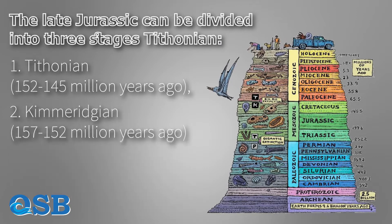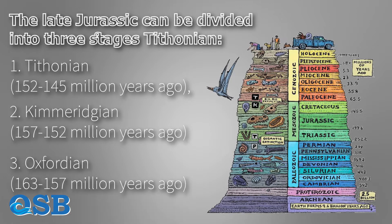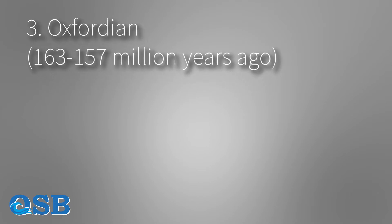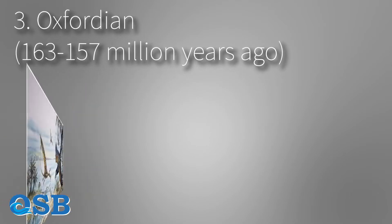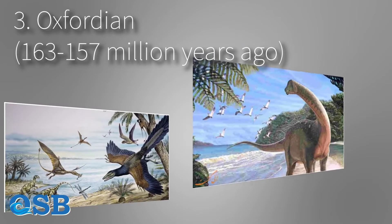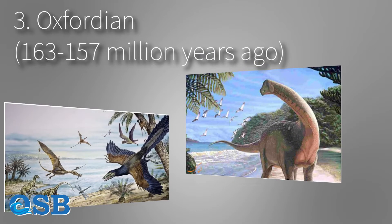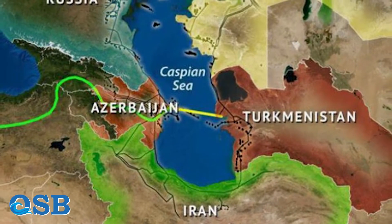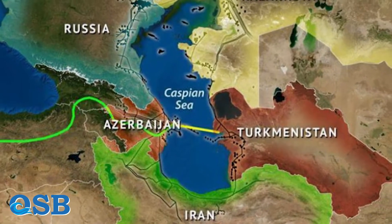The Late Jurassic can be divided into three stages: Tithonian (152 to 145 million years ago), Kimmeridgian, and Oxfordian (163 to 157 million years ago). During the Oxfordian period, the weather was hot and humid, and a lot of vegetation and dinosaurs appeared. After that, the Paratethys became progressively shallower, mainly due to a drying climate. Today, the Black Sea, Caspian Sea, Aral Sea, Lake Urmia, and Namak Lake are remnants of the Paratethys Sea.